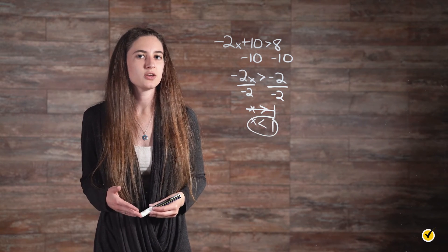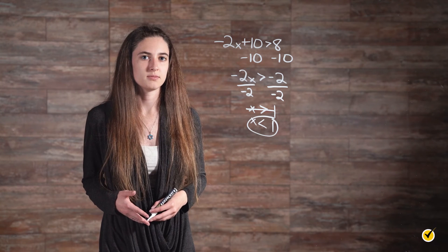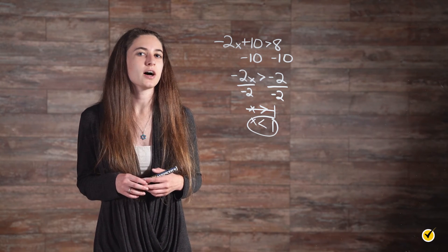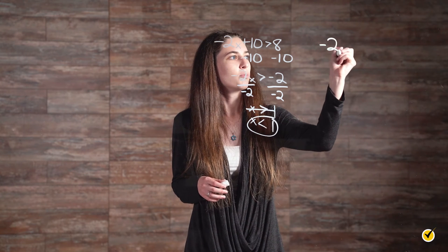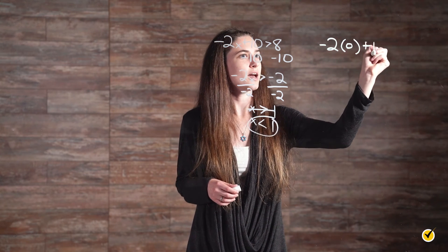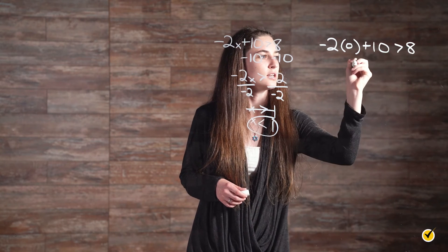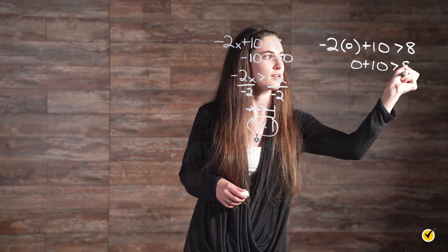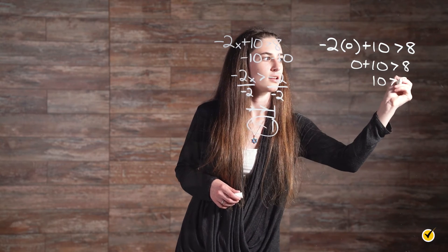This means that any value less than 1 will make our inequality correct. To test our answer, using the value 0 for x, we plug in: negative 2 times 0 plus 10 is greater than 8, giving us 0 plus 10 is greater than 8, which is 10 is greater than 8 — correct. Just as equations can also include absolute values, inequalities may include them as well. An absolute value expresses how far away a number is from 0, whether the number is positive or negative.